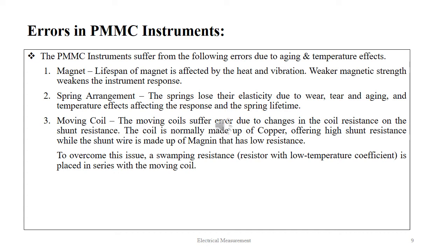The moving coil also induces error in the system. The moving coil suffers error due to changes in the coil resistance or the shunt resistance. The coil is normally made up of copper offering high shunt resistance, while the shunt wire is made up of manganin that has low resistance. To overcome this issue, a swamping resistance — a resistance with low temperature coefficient — is placed in series with the moving coil.